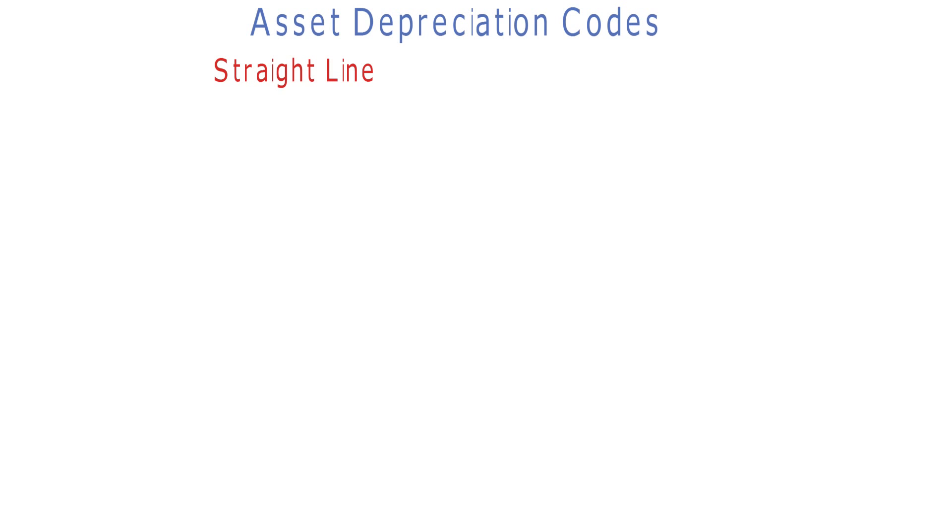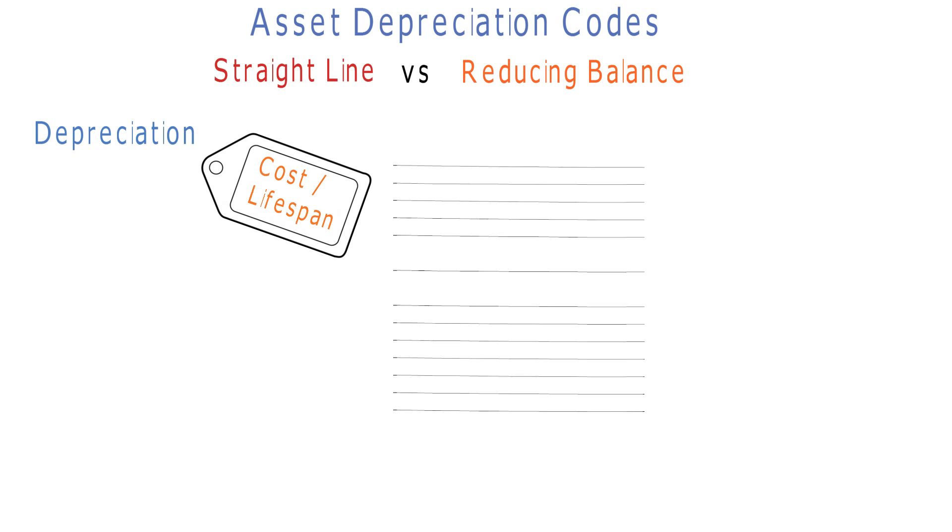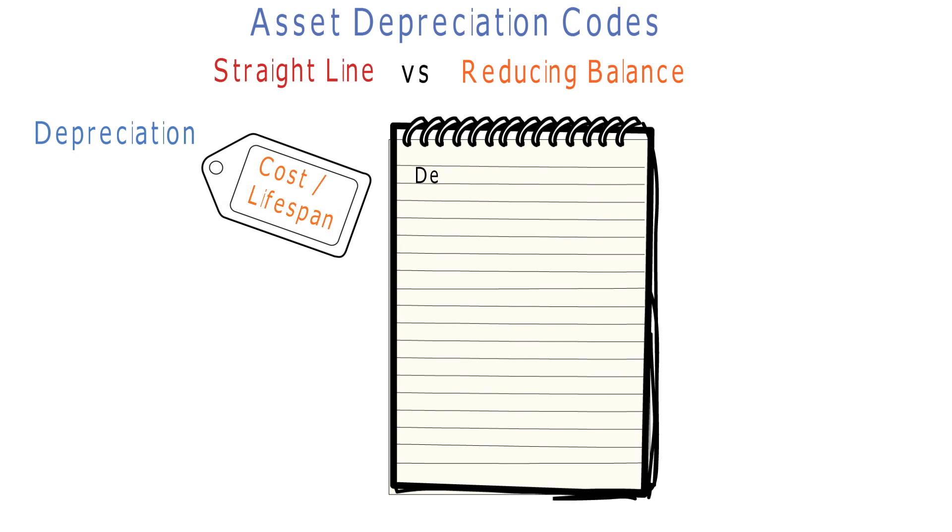Asset Depreciation Codes: Straight Line vs. Reduced Balance. Depreciation is the method of allocating the cost of a tangible asset over its useful life. Businesses depreciate long-term assets for both tax and accounting purposes. The former affects the balance sheet of a business or entity, and the latter affects the net income that they report.